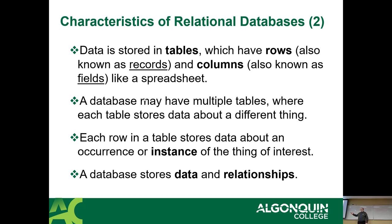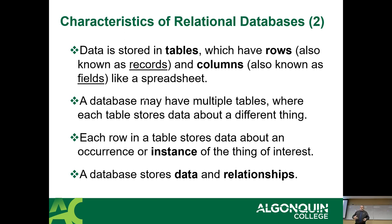Each table stores data about different things. In my filing cabinet at home you'd have credit card statements, car insurance, cell phone bill, tax papers — each folder has different kinds of information. Each row in a table stores data about an occurrence or instance of the thing of interest. For example, a folder with all my car paperwork has all the invoices from the car dealership for all the oil changes, the brake job — multiple instances of each visit I took, each one a record of a given visit and what was done.